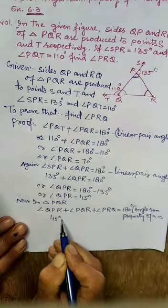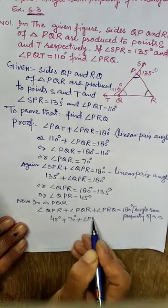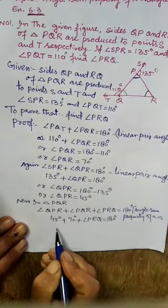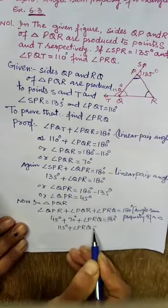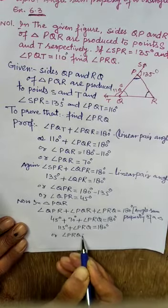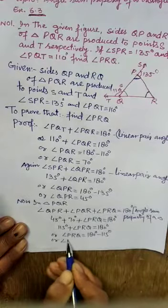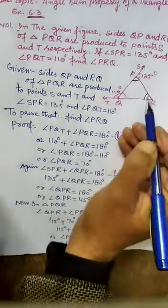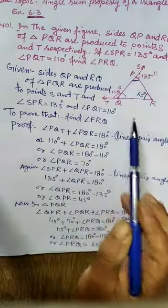So angle QPR is 45 degrees, angle PQR is 70 degrees, and angle PRQ equals 180 degrees minus 45 plus 70. Therefore, angle PRQ equals 180 degrees minus 115 degrees, which equals 65 degrees.